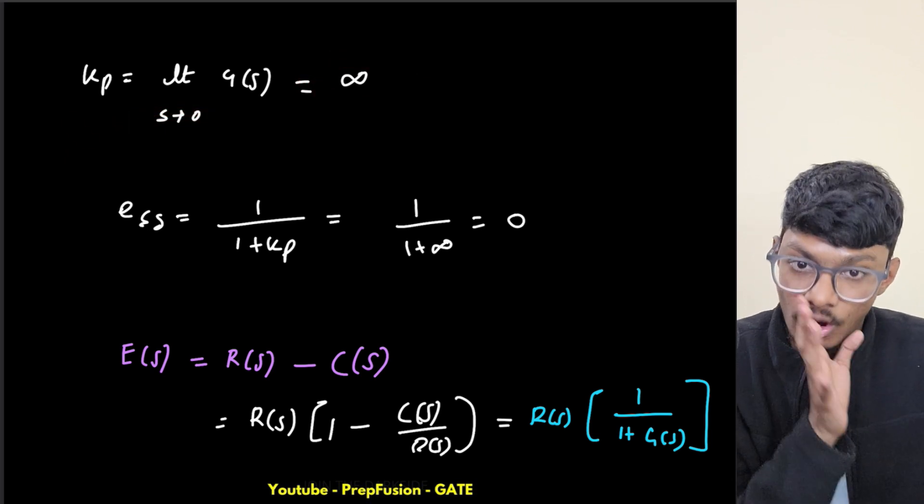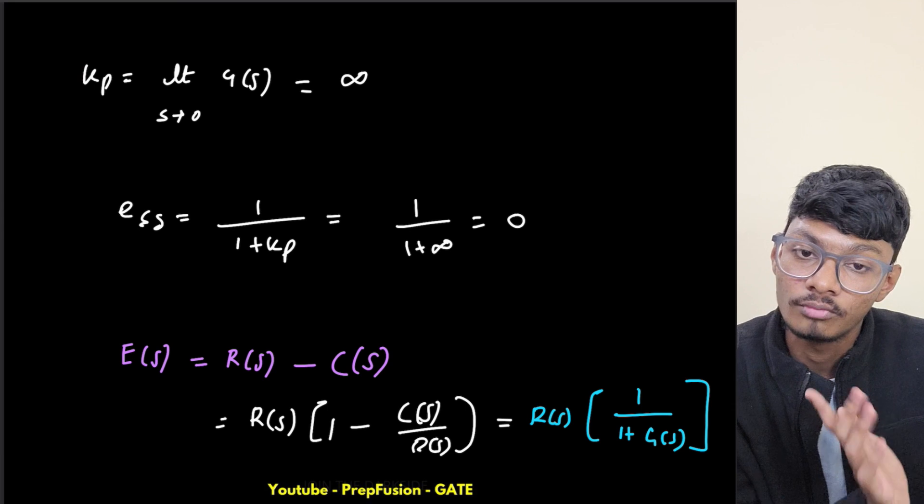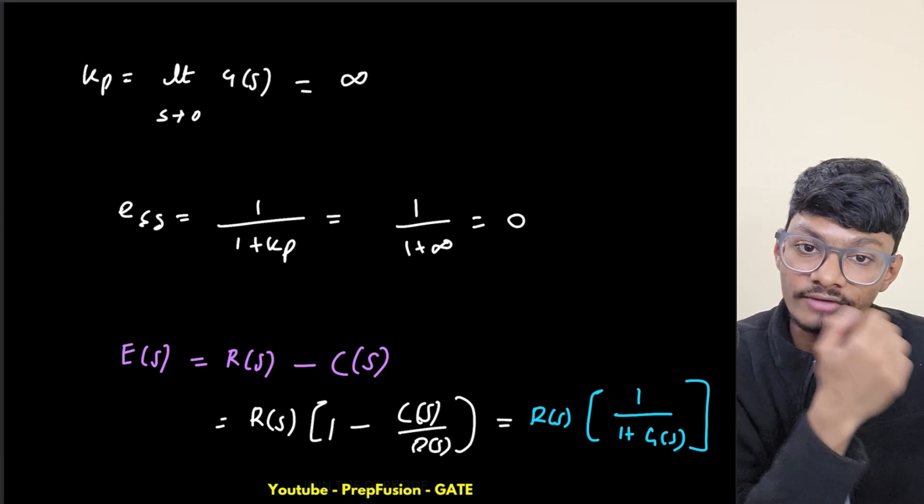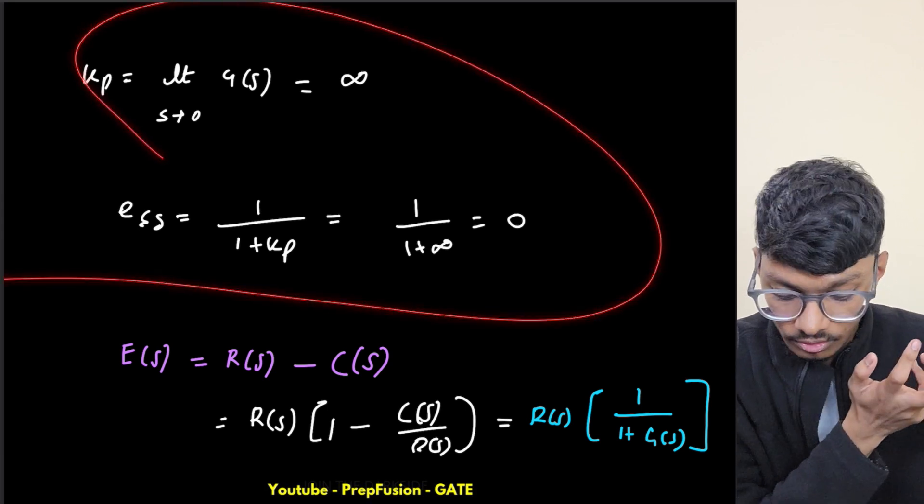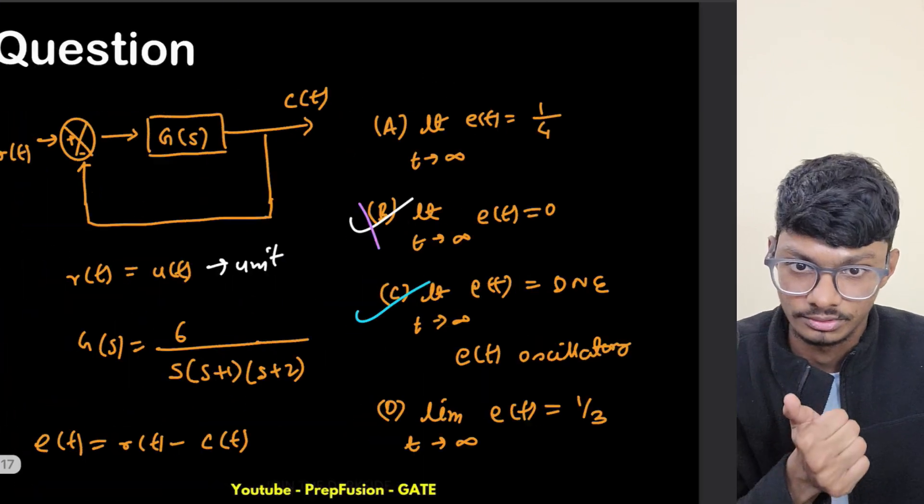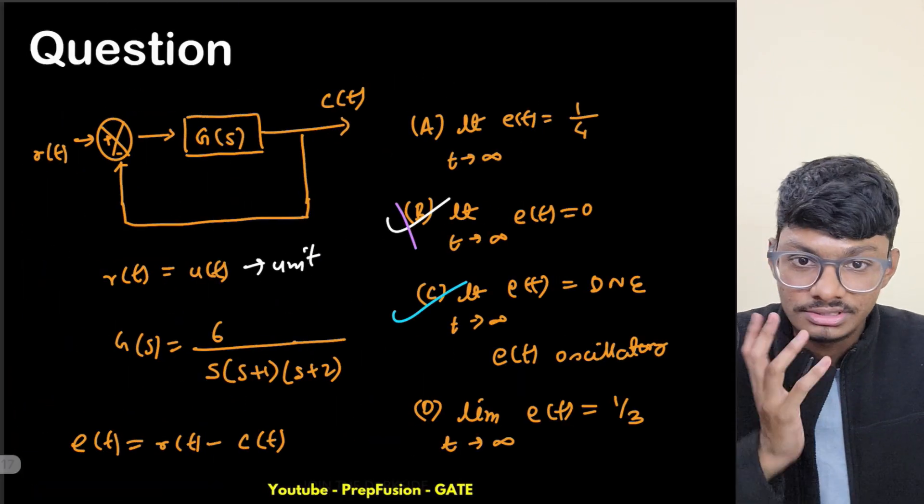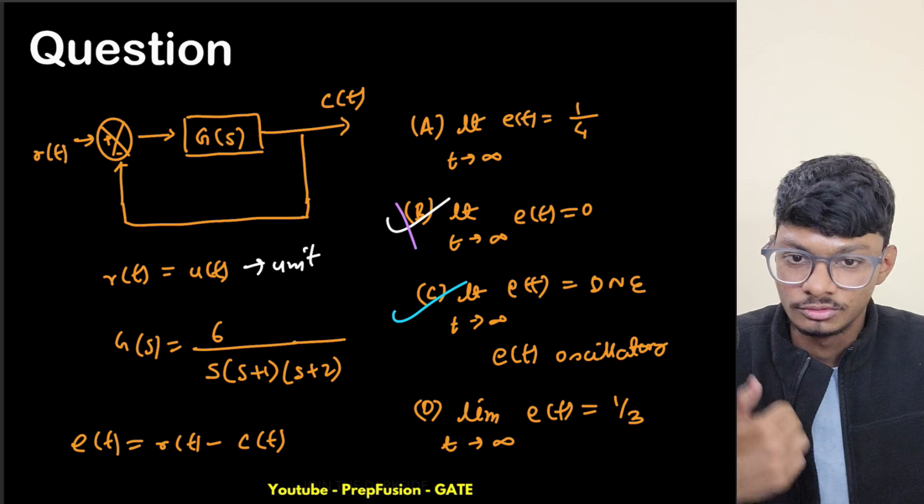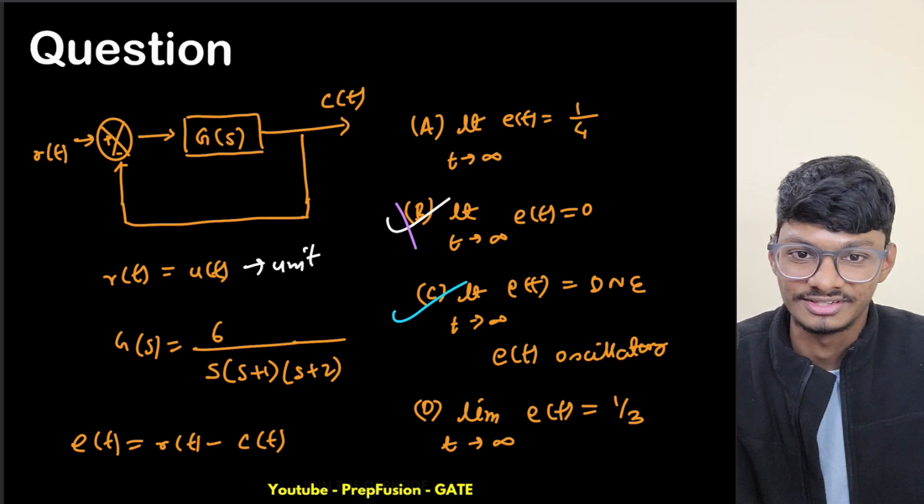No, you also have to remember that all these are derived from the final value theorem. If the final value theorem isn't applicable, then obviously all these are not valid. Just be careful about that. Thank you for watching this solution. I hope you liked this. If you did, then do hit the like button and I will see you in the next video. Thank you.